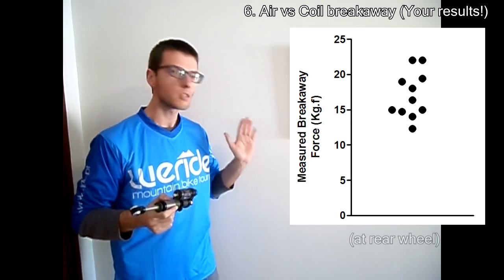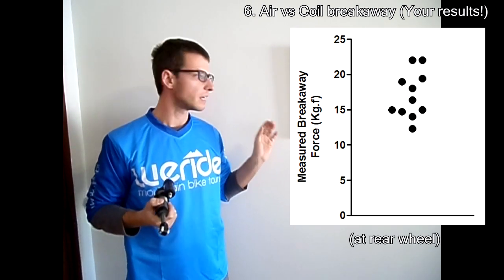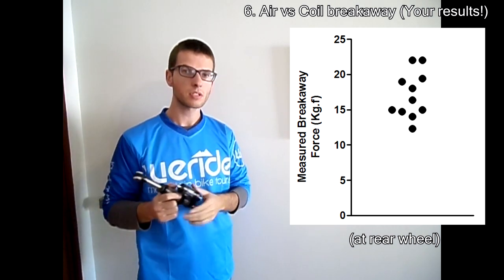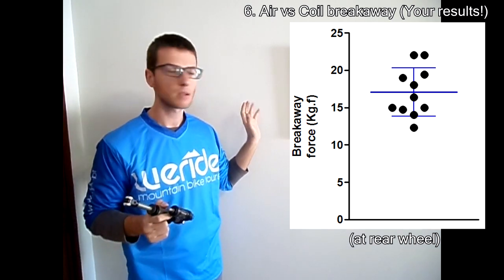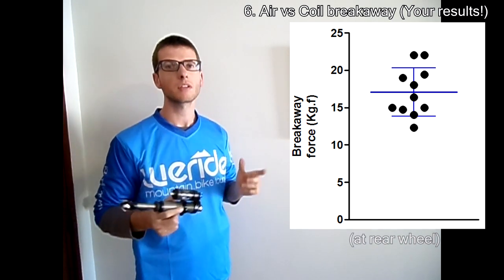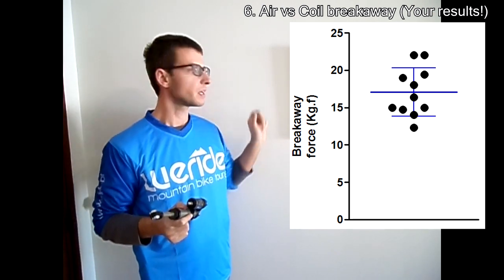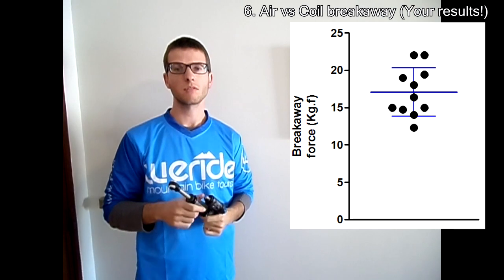In the last episode I asked you to do the weight scale test and send me your breakaway results. I collected 11 results, which is a good number. Honestly I was expecting huge variability, but that was not the case. Your breakaway forces on average are about 17 kilograms with roughly 3 kilograms of standard error — so there is no big variability.